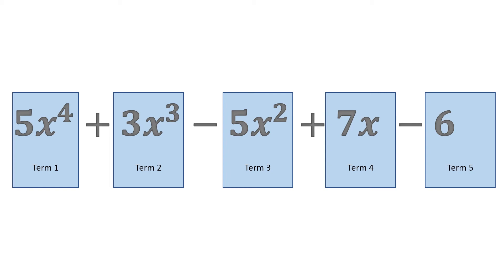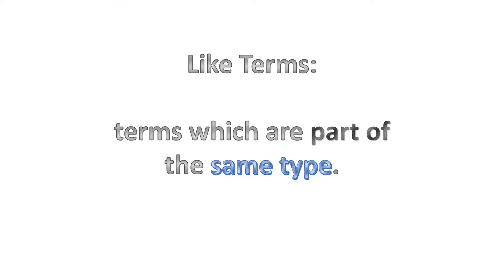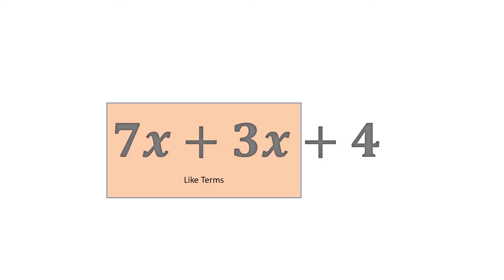Like terms. A like term is terms which are part of the same type. For example, in this expression 7x plus 3x plus 4, we have two like terms, the 7x and the 3x, because both of them have the same variable, x, that we can use to add these two together. 7x plus 3x will eventually become 10x plus 4 when we start to simplify the expression.